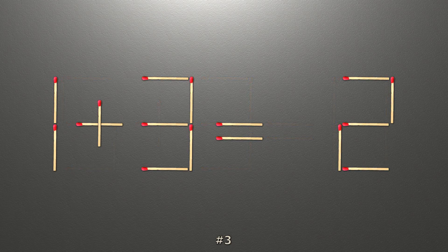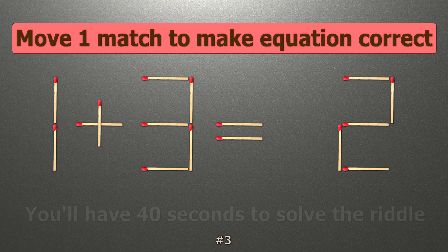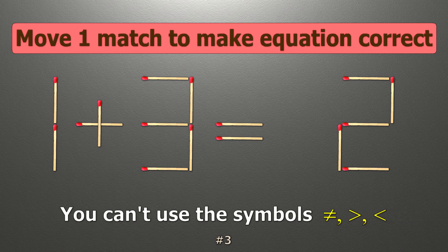We have the equality 1 plus 3 equals 2. Our equality is wrong. We need to move one match to make our equality correct.